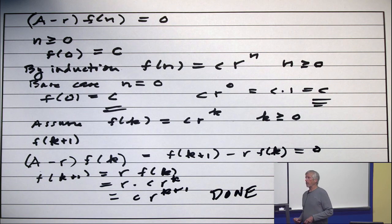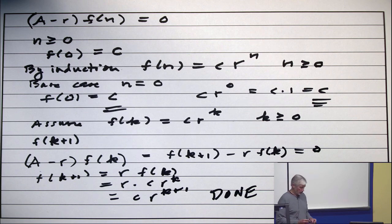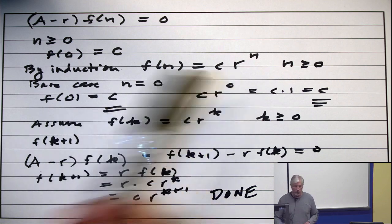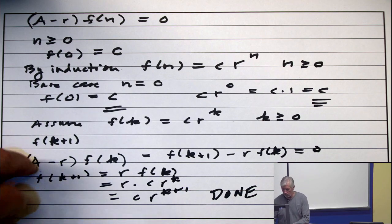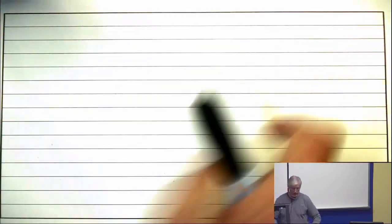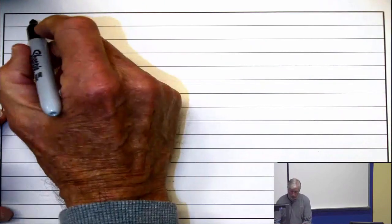That's a perfectly good, elementary proof by induction for the case f(n) = c·r^n when n is non-negative. Now, what do you do second? Case 2.